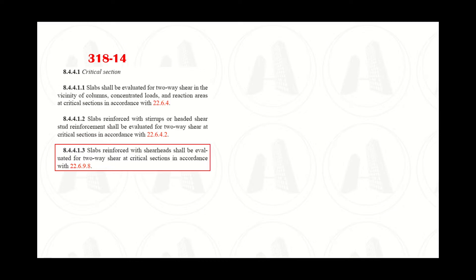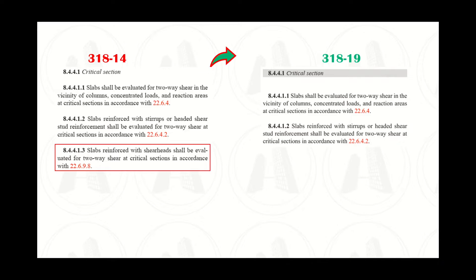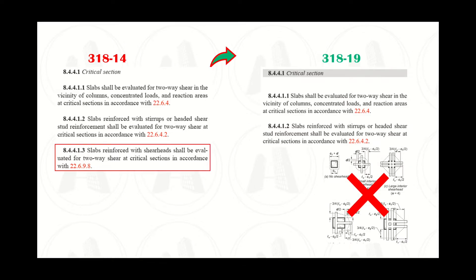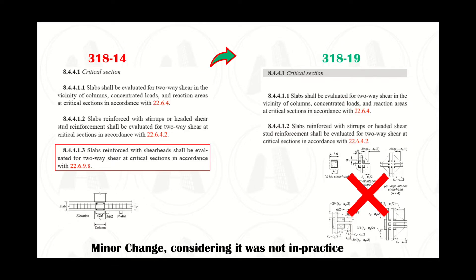Guidelines related to the design of shear head reinforcement have been removed from the 2019 version of ACI 318. The likely reason is that industry does not use it because of too much congestion in beam-column joints. Single or multiple leg stirrups fabricated from rebars or headed shear stud reinforcement is preferred, especially headed shear stud reinforcement because of the ease of placement.